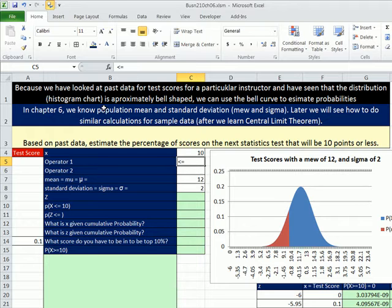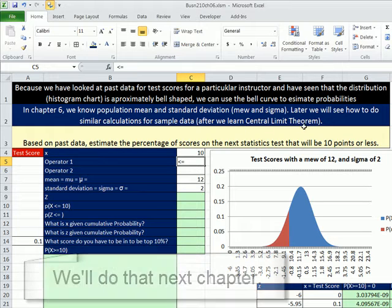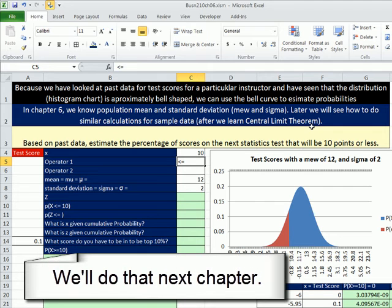And we've seen that the distribution, remember the distribution pattern or shape is revealed by, for example, a histogram chart. But that past data gives us an approximately bell-shaped distribution. And that's why we can use the bell curve to estimate probabilities. Second point, this is chapter 6. We're going to know the population mean and the population standard deviation, mu and sigma. Later chapters, we'll see how to do it from sample data. We have to learn the central limit theorem first.